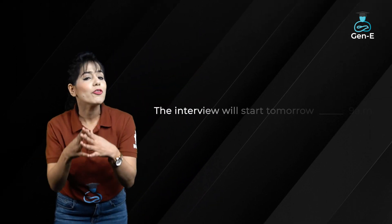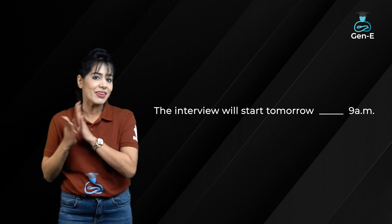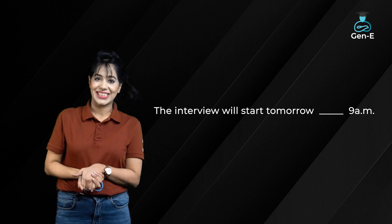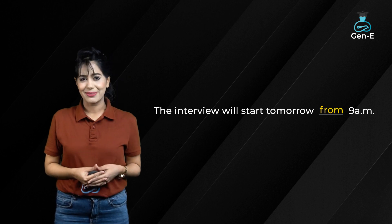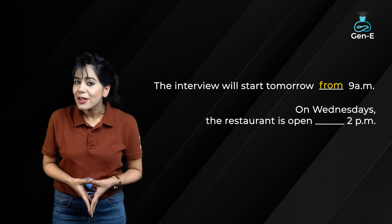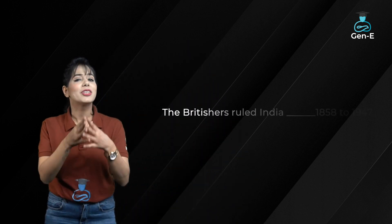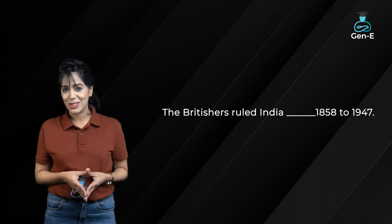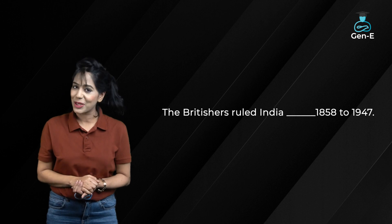Jaisay, the interview will start tomorrow from 9 am. Yeh ek future event hai, is liye yahan pe since use nahi kar sakte, is liye yahan pe starting point indicate karne ke liye from use karenge. Let's take one more example: on Wednesdays, the restaurant is open from 2 pm. Since 2 pm sahih nahi hai. From ko hum do points of time ko indicate karne ke liye bhi use karte hai. Jaisay, the Britishers ruled India from 1858 to 1947. Yahan pe do point of time hai aur is liye hum ne use kiya from.